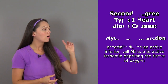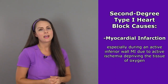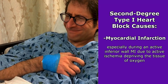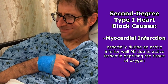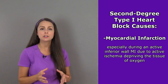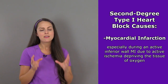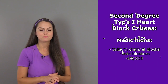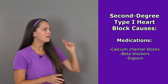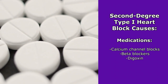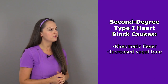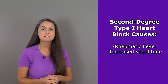What can cause this type of heart block? A myocardial infarction can — especially an active MI affecting the inferior wall of the heart — because it causes acute ischemia that deprives heart tissue of the oxygen it needs to function. In addition, medications can cause this, such as calcium channel blockers, beta blockers, and digoxin, as well as rheumatic fever and increased vagal tone.